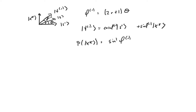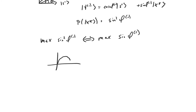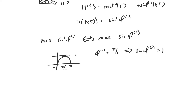We want to maximize this probability. Maximizing sine-squared(φ_r) is the same thing as maximizing sine(φ_r). Sine looks something like this: at zero it's equal to zero, at π/2 it's equal to one, and then it returns to zero at π. So if φ_r is equal to π/2, then sine(φ_r) is equal to one, which means the probability of finding the system to be in the state x-star upon measurement is also equal to one.